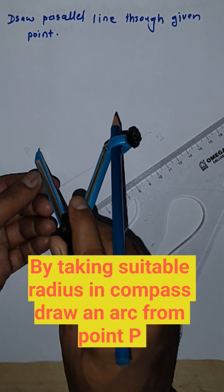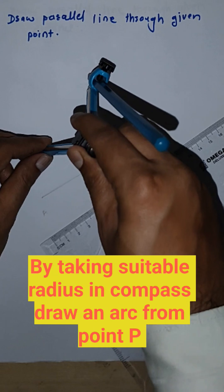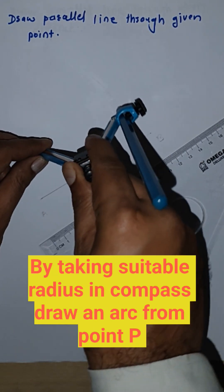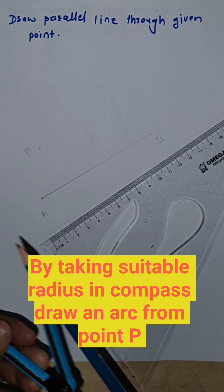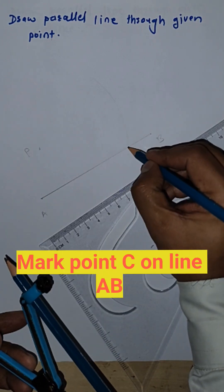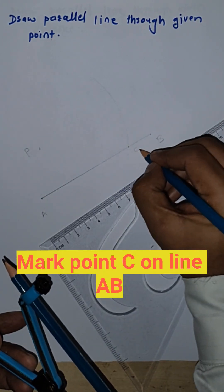Take any radius which will cut the AB line and draw arc. Now we will get a point. This is our C point.